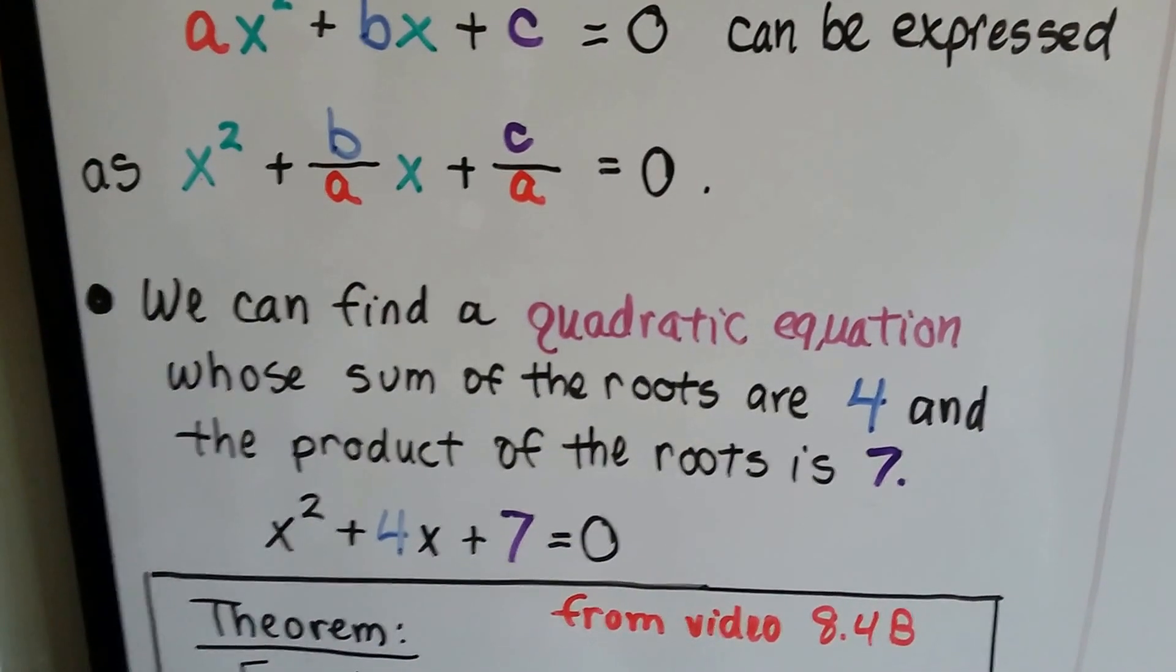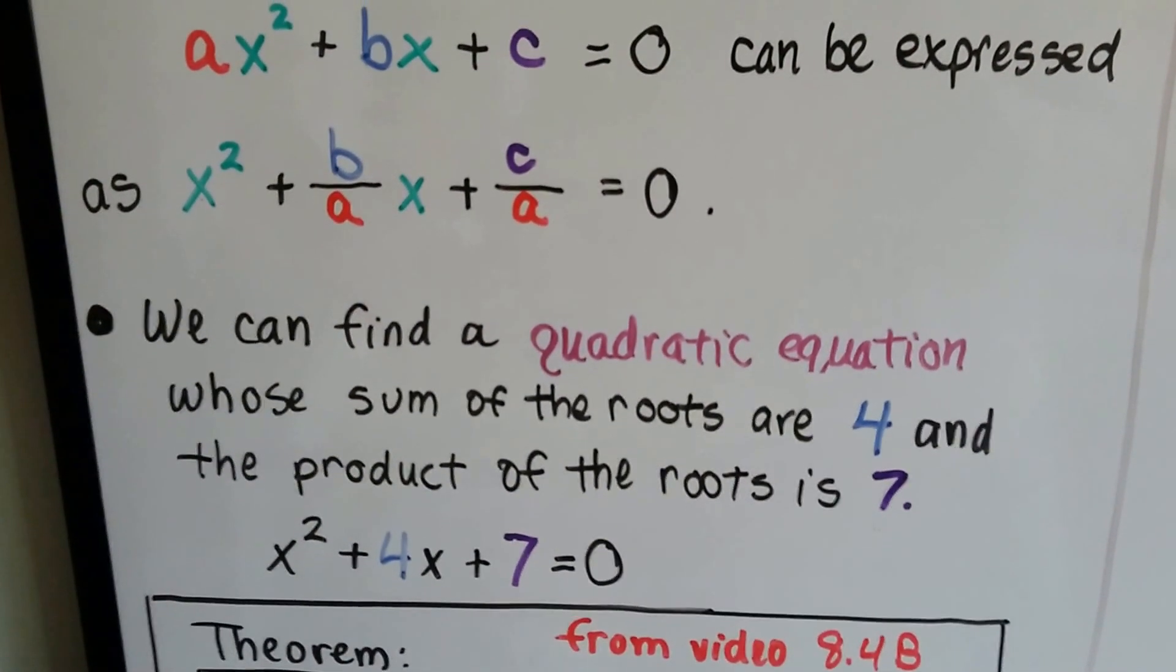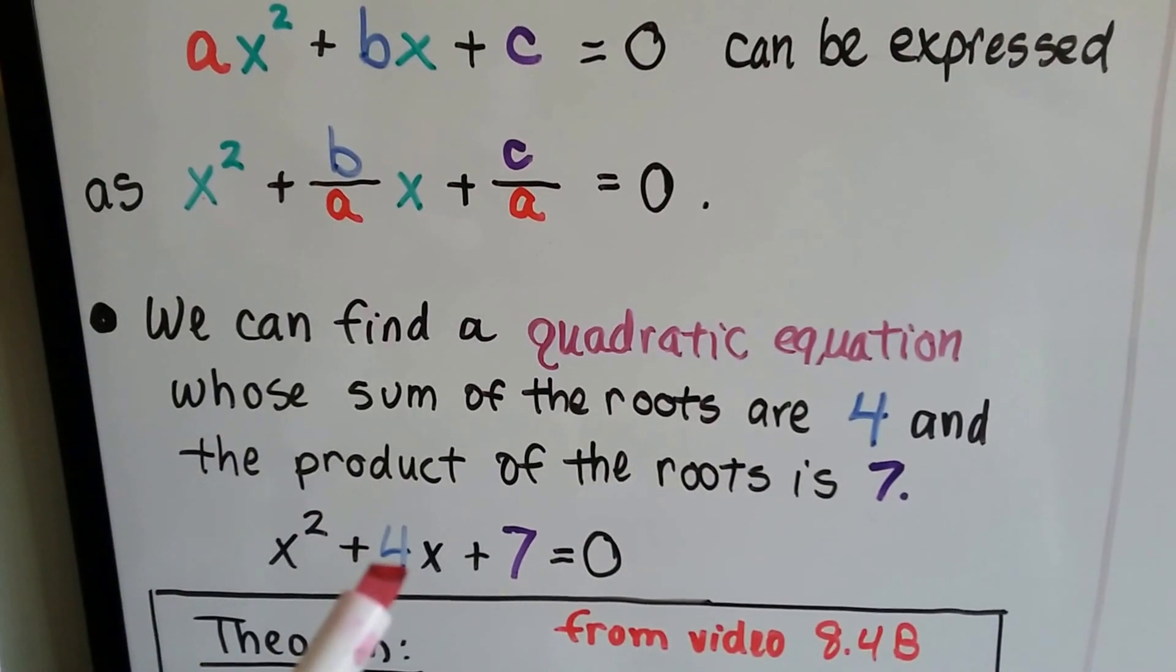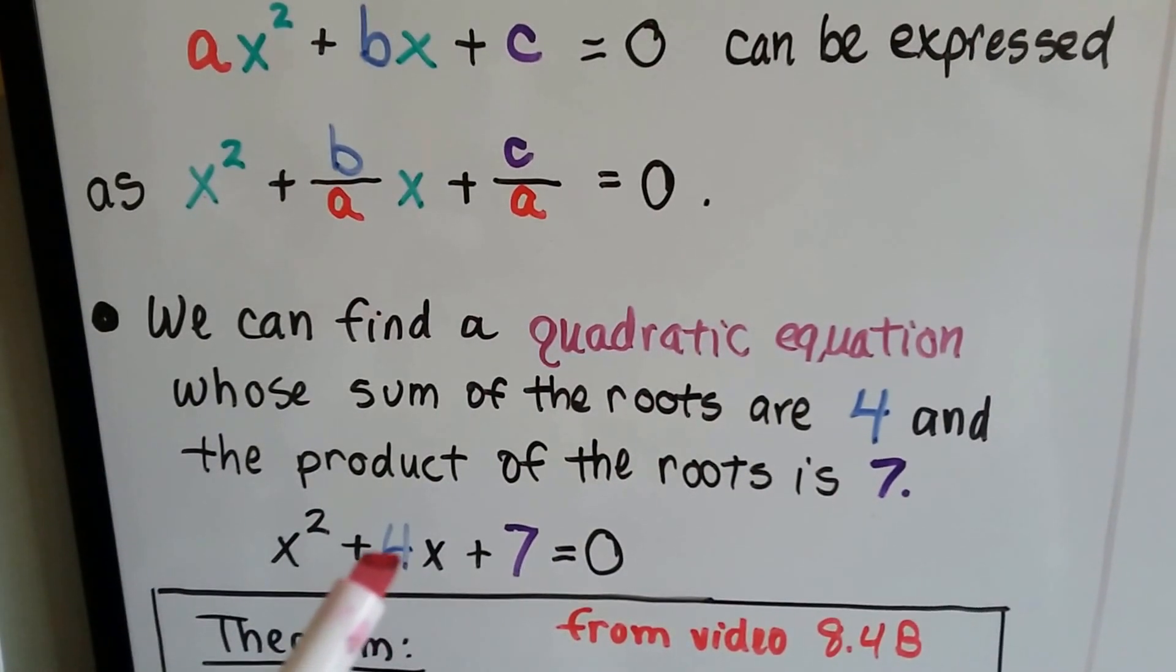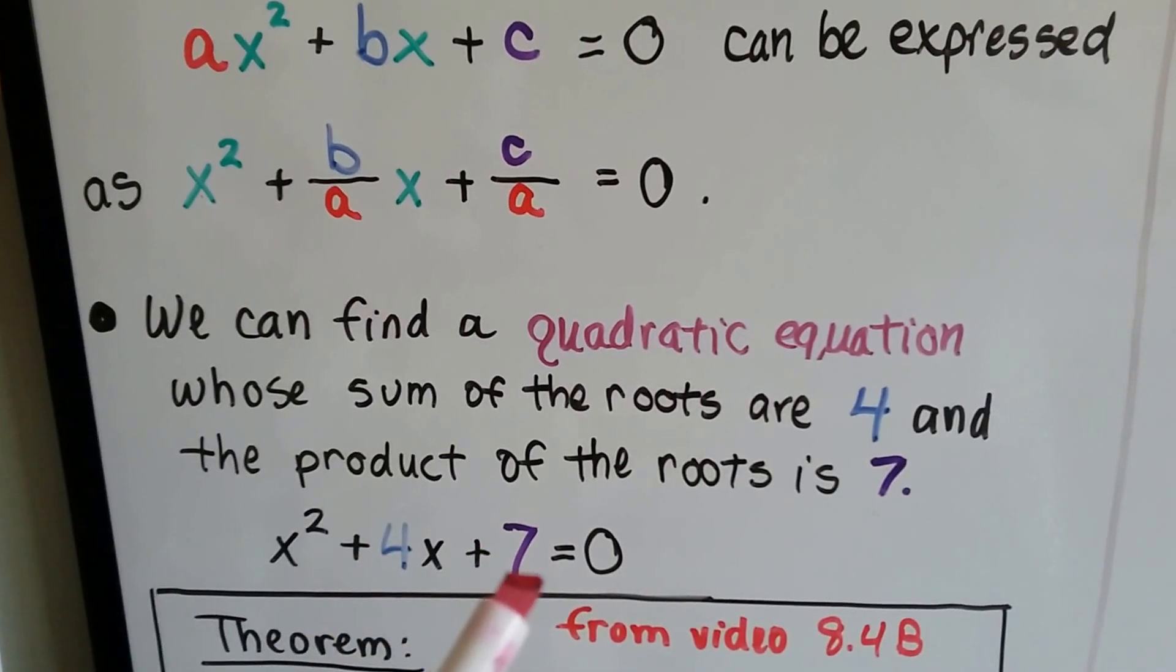We can find a quadratic equation whose sum of the roots is 4 and the product of the roots is 7. For the first degree term, we put the 4, and for the constant we put the 7.